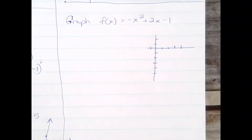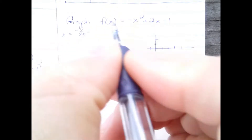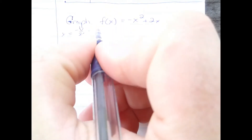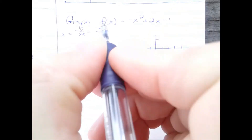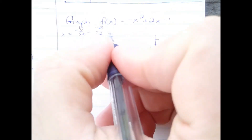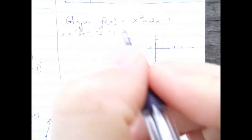Here we're going to graph the quadratic negative x squared plus 2x minus 1. We're going to start out with the vertex. x equals negative b over 2a, which gives negative 2 over 2, which is 1. So that is the x coordinate of the vertex.